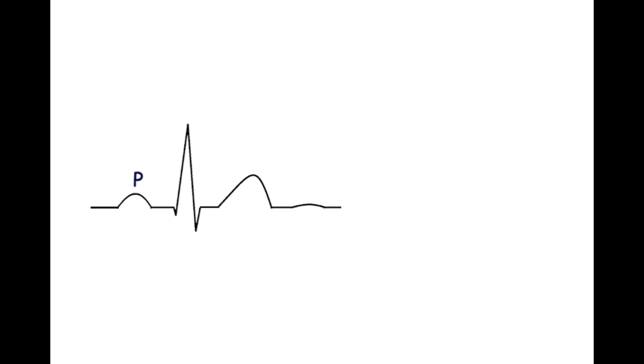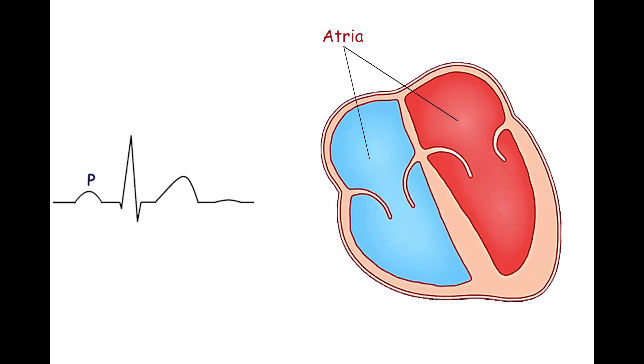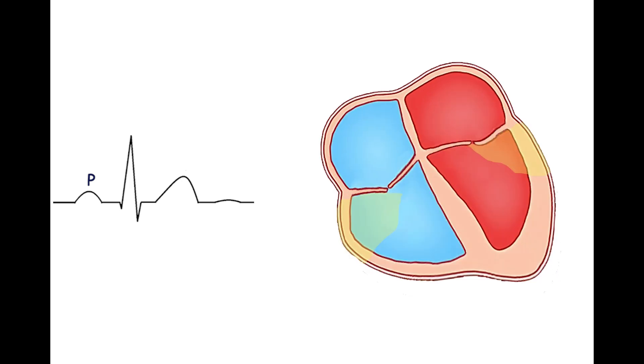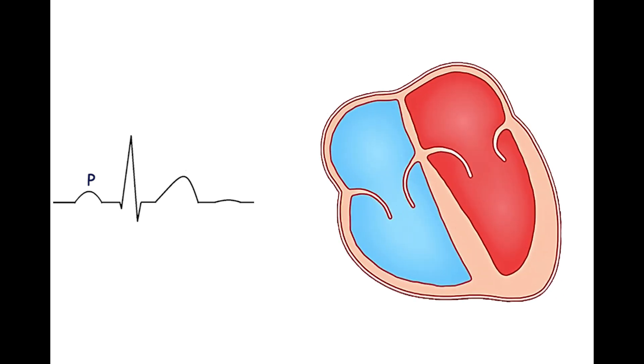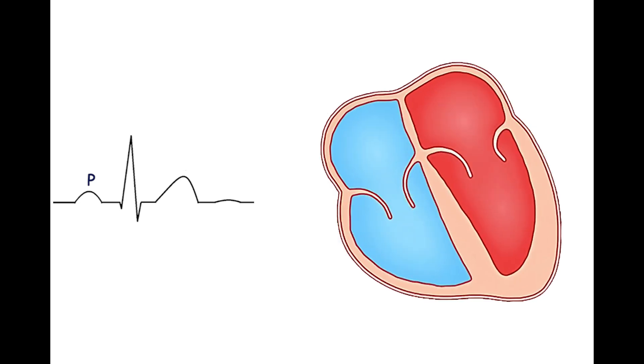The P wave represents atrial depolarization. The depolarization wave originates from the sinoatrial node and spreads first to the right atrium, then to the left atrium. The depolarization wave also reaches the atrioventricular node, where the impulse can travel to the bundle of His with a physiological delay.